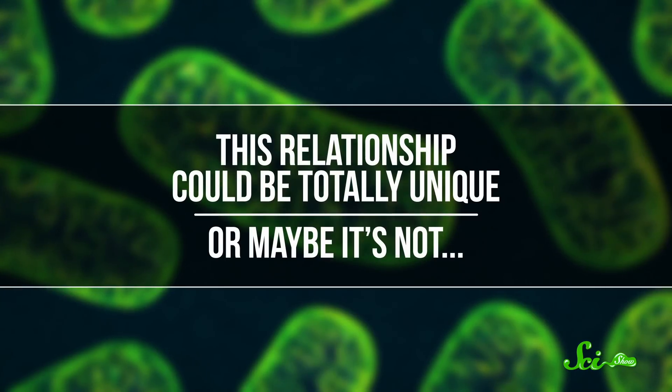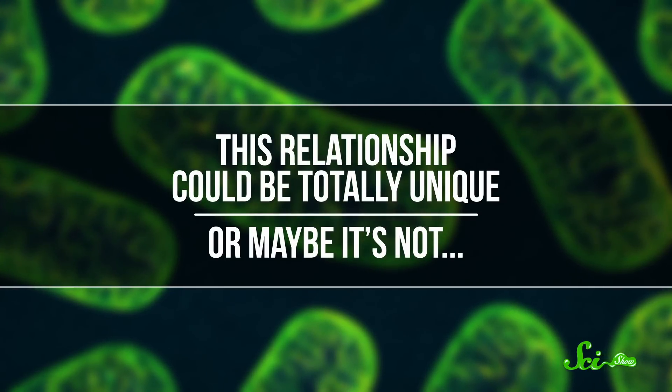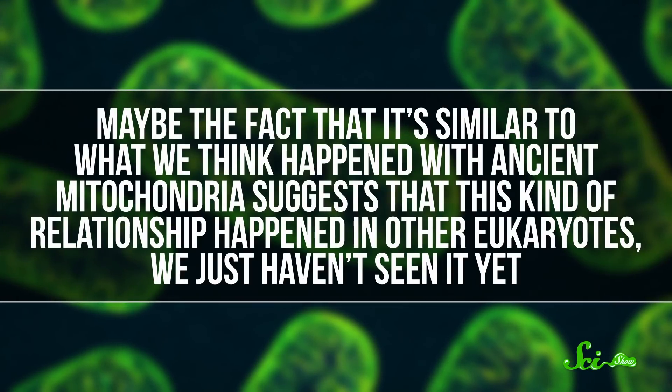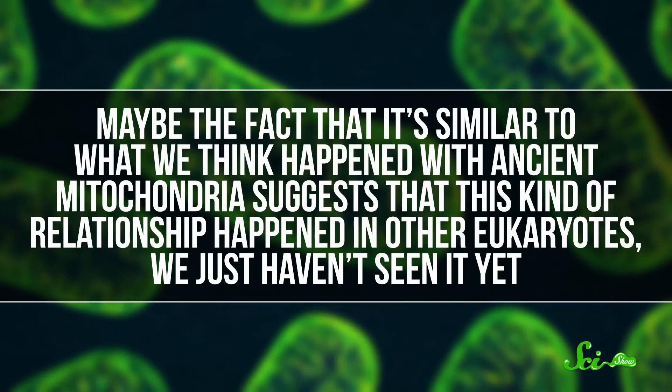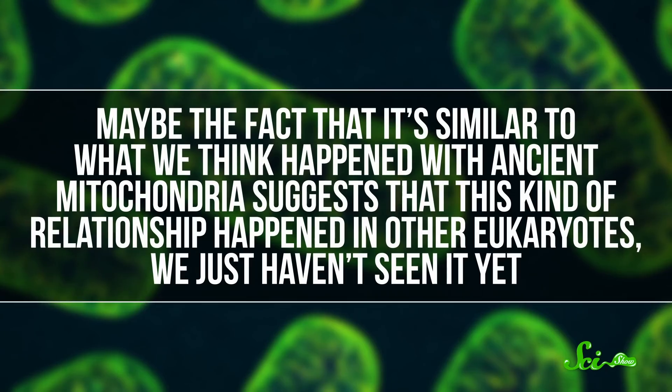We may be witnessing an evolution similar to the one that took place billions of years ago, when those mitochondrial ancestors first teamed up with another cell to form eukaryotes. There are a lot of things we still don't know about this, though. Like, this relationship could be totally unique, or maybe it's not. Maybe the fact that it's similar to what we think happened with ancient mitochondria suggests that this kind of relationship happened in other eukaryotes, we just haven't seen it yet. And if endosymbionts can help their host breathe nitrate or oxygen, then what about other compounds?